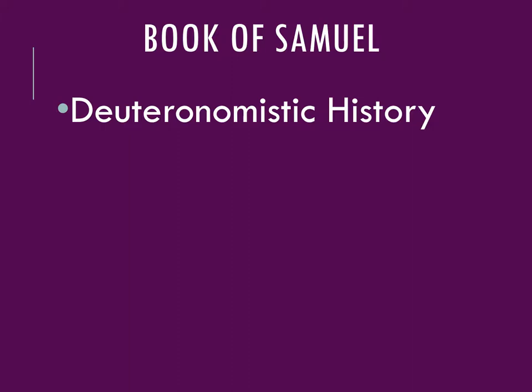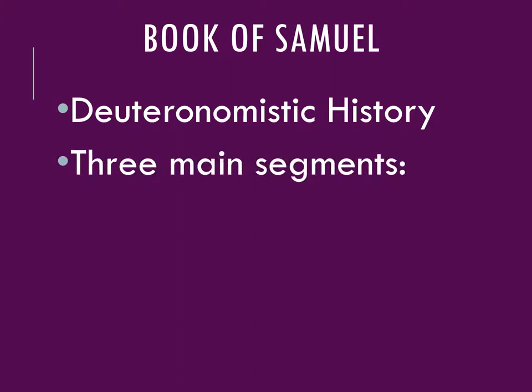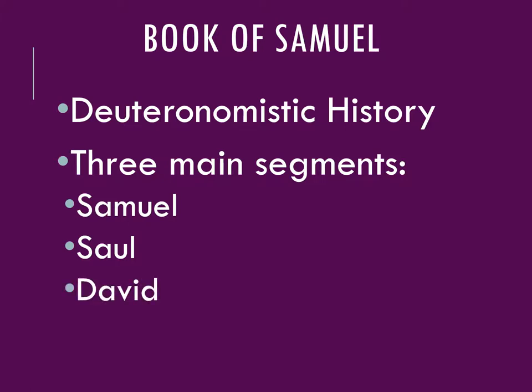Some of the concerns we see with the Deuteronomistic history are seen in Samuel and Kings as well. These include the centralized worship at the Temple, the emphasis on the Davidic Covenant, and worship exclusively of Yahweh. The Book of Samuel, composed of 1st and 2nd Samuel and originally one composition, has three major sections: a discussion of Samuel the prophet, the anointment of Saul as the first king of Israel, and a discussion of David, who seems to be the primary focus of the book.